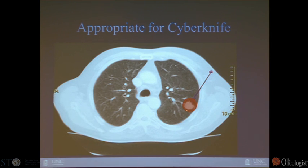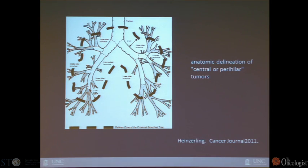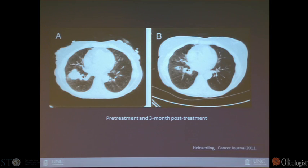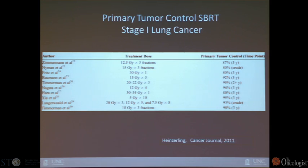Here's an example of a peripheral lesion that could be treated with CyberKnife. We tend not to treat more central areas due to concerns about toxicity. Here's an example of a pre-treatment lesion — a relatively large lesion — and three months post-treatment showing good responses. Looking at lung cancer with stereotactic approaches from a variety of institutions, one can achieve local control in the primary site in the range of 80 to 90%, so there is fairly good data that this approach can be effective in controlling local disease.